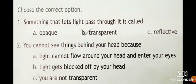Next we'll see the exercise, choose the correct option. First one: something that lets light pass through it is called. Options are opaque, transparent, reflective. The correct option is transparent.